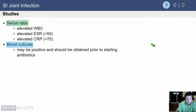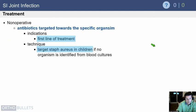Labs will be elevated just like in other septic arthritis — you may have an elevated white blood cell count, ESR, and CRP. Blood cultures may be positive and may be the best way to identify the causative organism.